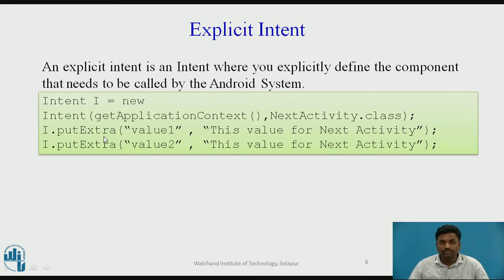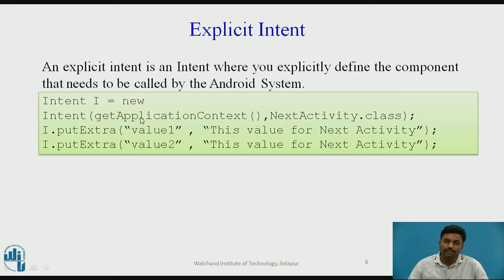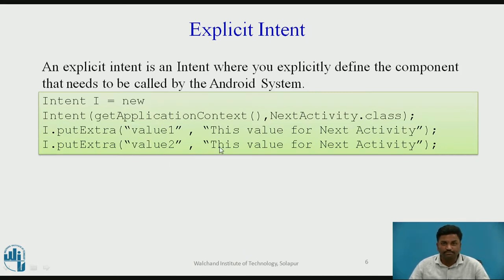Explicit intent is also used to transfer data. Using i.putExtra(), you pass two parameters in a key-value pair. The first parameter is a key — here it is 'value1' — and the second parameter 'value for next activity' is the value associated with that key. The value can be a string, an integer, or any data type.